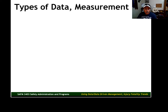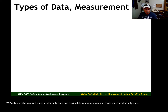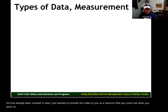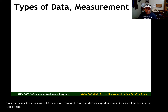Hello. We've been talking about injury and fatality data and how safety managers may use those data. More specifically, one of the topics we talked about was the use of injury and fatality rates and how to calculate those rates. This has already been covered in class. I just wanted to provide this video as a resource you could use when you work on the practice problems. Let me run through this quickly — just a quick review — and then we'll go through the step-by-step procedure for calculating the injury rate and the fatality rate.